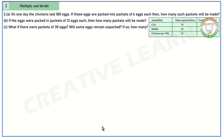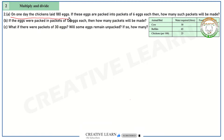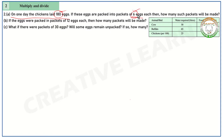Here is the second question, part A. On one day, a chicken laid 180 eggs. If these eggs are packed into packets of 6 eggs each, then how many such packets will be made? Total eggs laid: 180. We have to find out how many packets will be made, where each packet consists of 6 eggs.